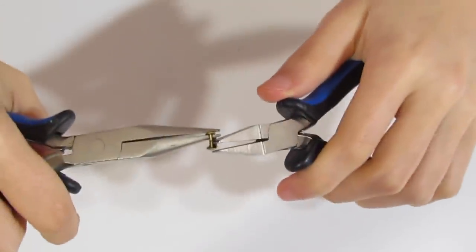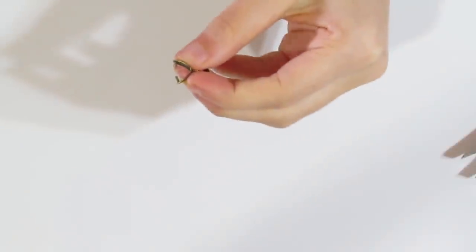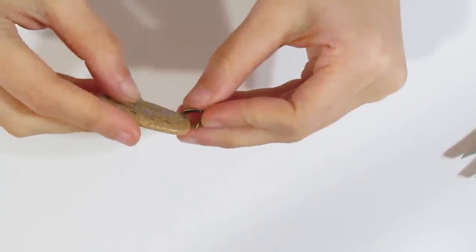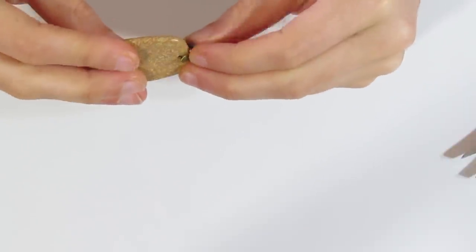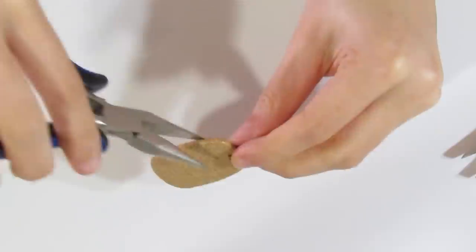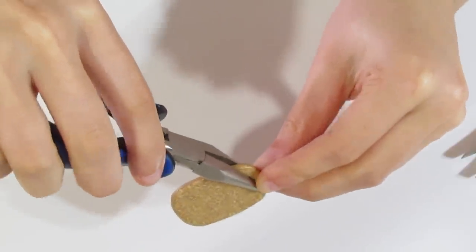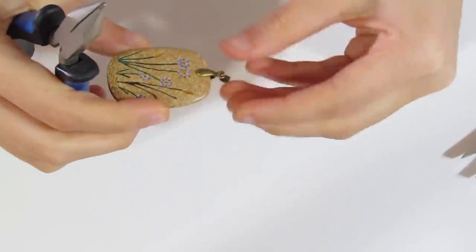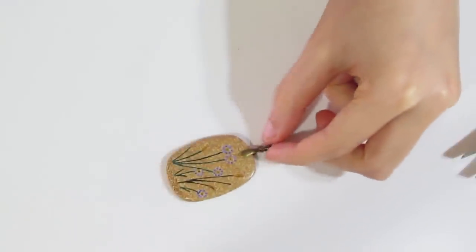So now all you would do is you would attach a bail to the piece that you like. Or all of them, essentially. So I've got a brass bail here, which is something that I quite like. I think I'm going to attach it to this one here. And just pinch that closed. Like so. And there's your bail.